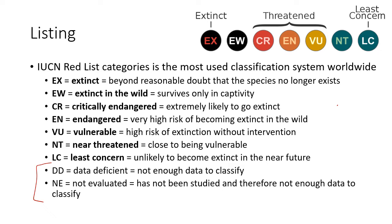You should know the main categories — the ones shown prominently — since data deficient and not evaluated don't really show up in most contexts.